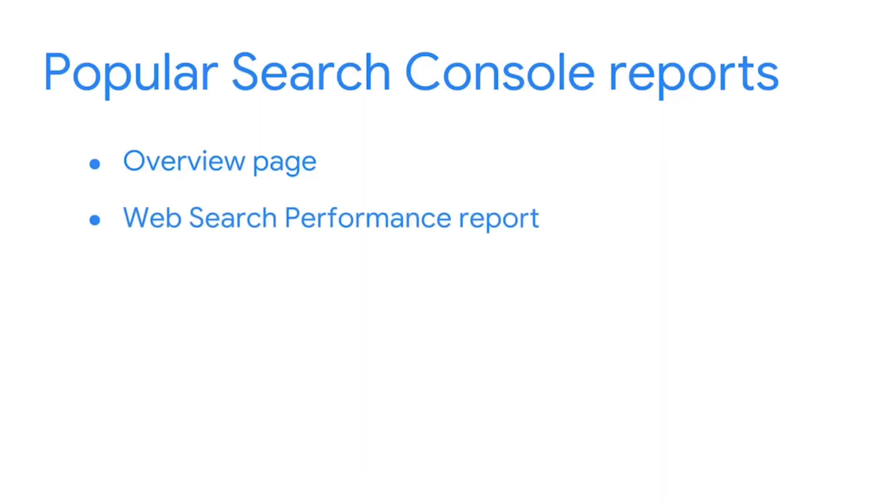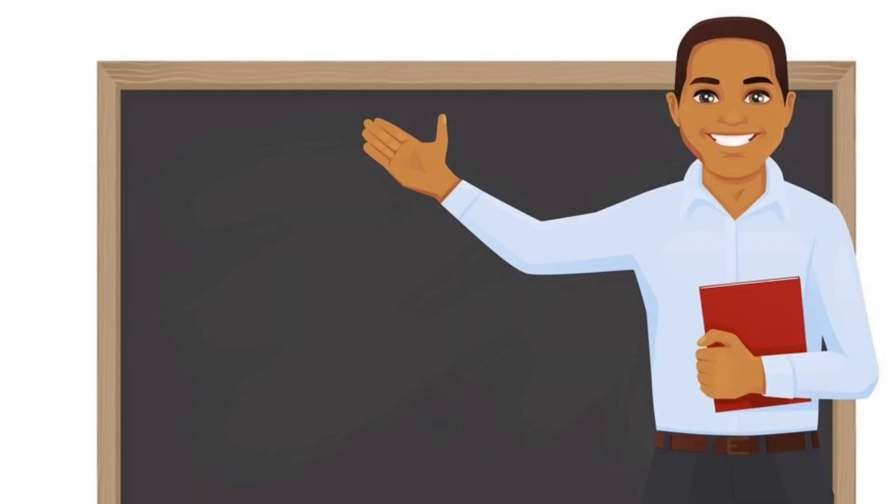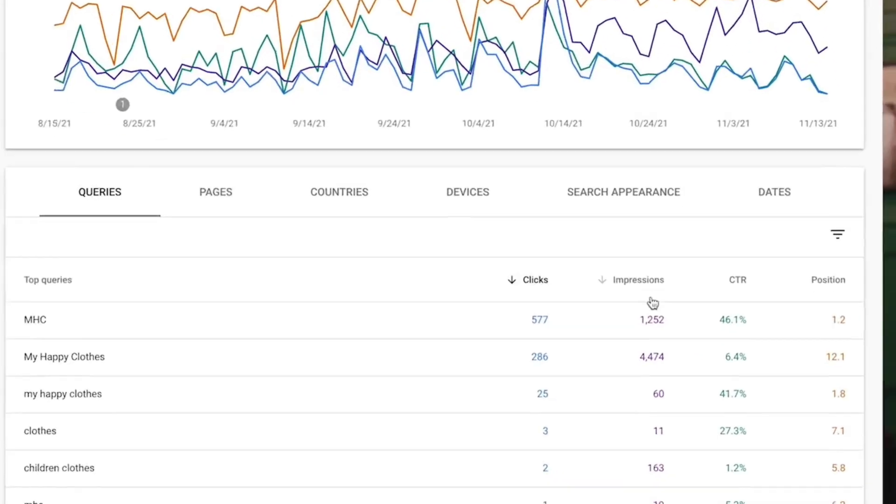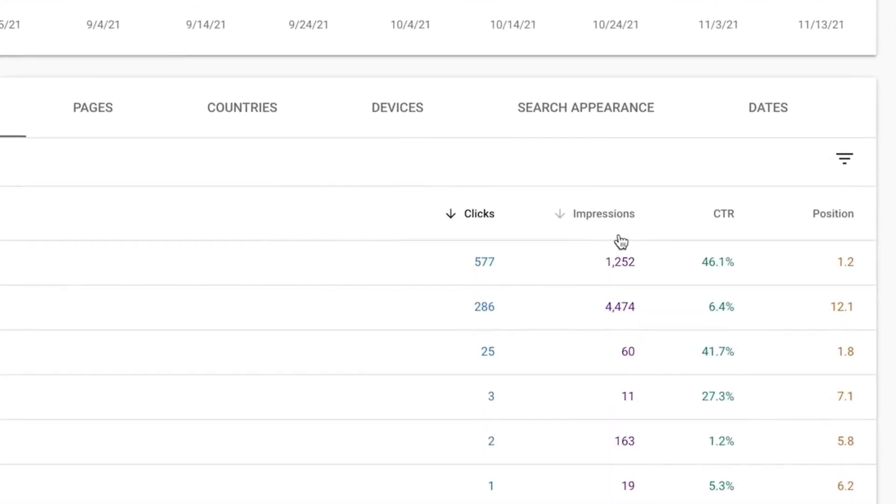The website performance report focuses on several SEO-related metrics. Let's quickly cover some of those. Impressions are how many times your site has been seen by someone in Google Search.